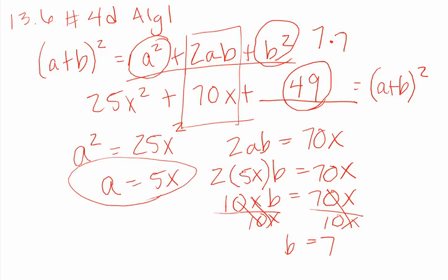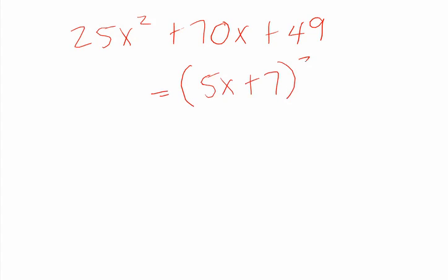If you want, you can prove it to yourself and say, 25X squared plus 70X plus 49 has to equal 5X plus 7 squared.